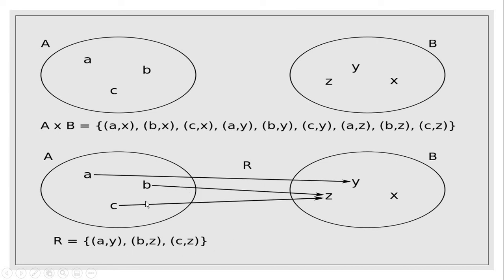This is a binary relation over set A and set B. You can also see from here, a is pairing with y, b is pairing with z, and c is pairing with z. This is a binary relation, a subset of Cartesian product.